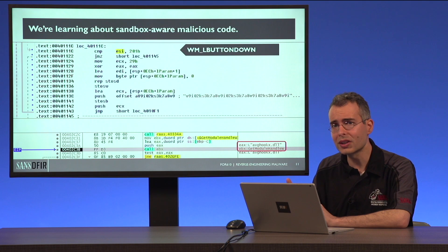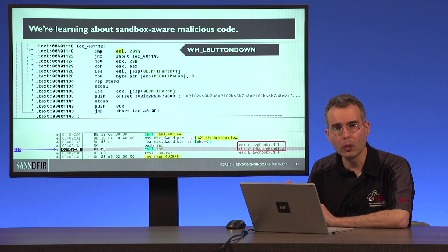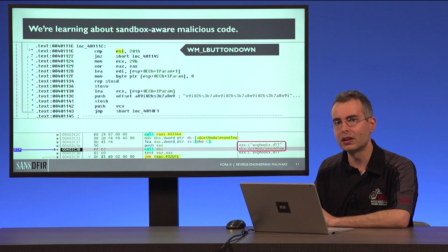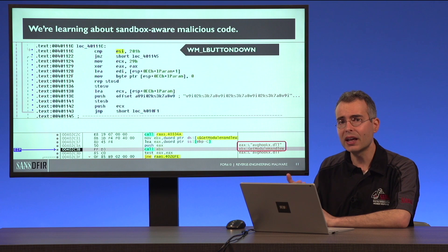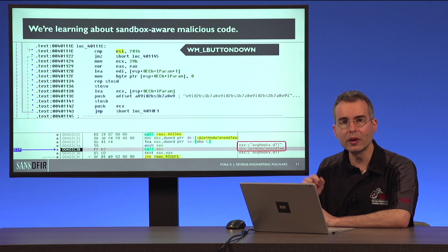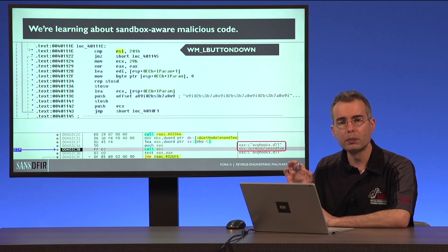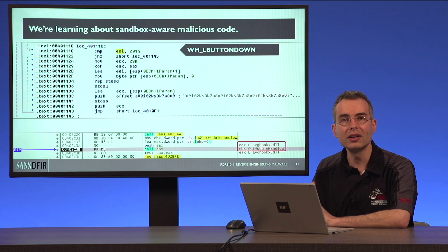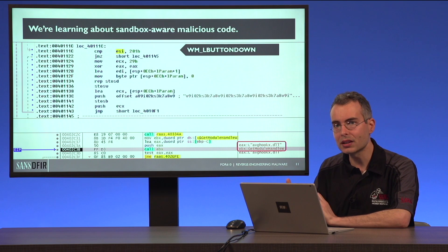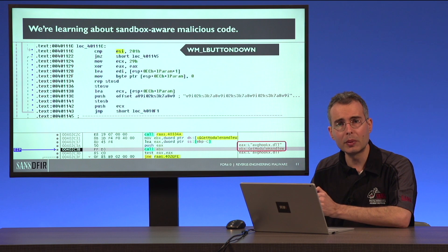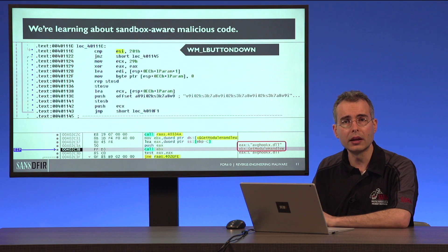We also have more examples of evasive malware — malicious software that is trying to detect whether it is being analyzed. For instance, malicious software might check for mouse activities, looking for mouse button clicks to determine whether the system it's about to infect looks like a real system or whether it might be a sandbox. We're looking at such samples and learning ways to understand these capabilities and, of course, get around them.